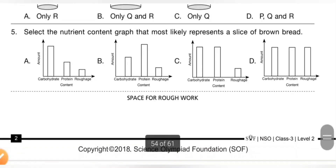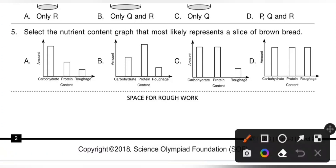Fifth question: select the nutrient content graph that most likely represents a slice of brown bread. Please pause the video and check options A, B, C, and D. We know a slice of brown bread is rich in carbohydrate, has little protein content, and less roughage. So option A is the correct answer.